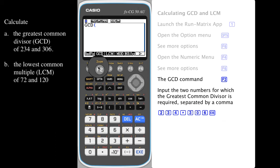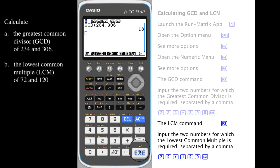The numbers should be separated by a comma. In our case, 234 and 306 are the integers of interest. Press execute to see the greatest common divisor of 18. The lowest common multiple command can be found above F3.